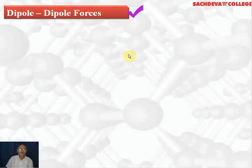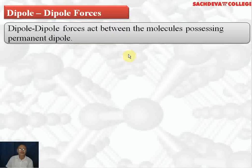We are going to take up dipole-dipole interaction or dipole-dipole forces. First of all, what type of molecules will have dipole-dipole interaction? The answer is polar molecules — those molecules which have a difference in their electronegativity. When there is a difference in electronegativity, there is a permanent dipole moment. The force of attraction between polar molecules is called dipole-dipole attraction or dipole-dipole attractive forces.